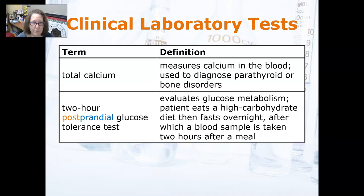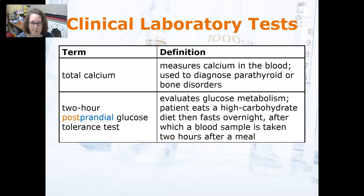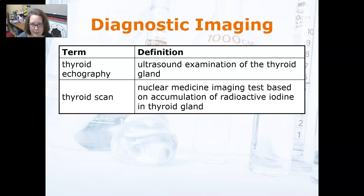If the person has normal glucose metabolism with adequate insulin production, even after a high-carbohydrate meal their blood glucose two hours post-meal should be back to normal. If it's not, you can assume impaired glucose metabolism.